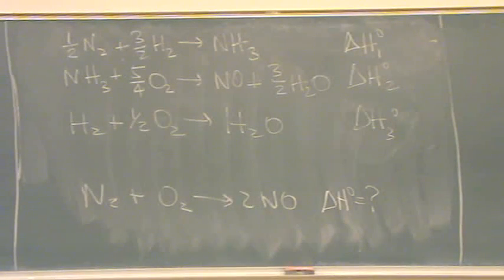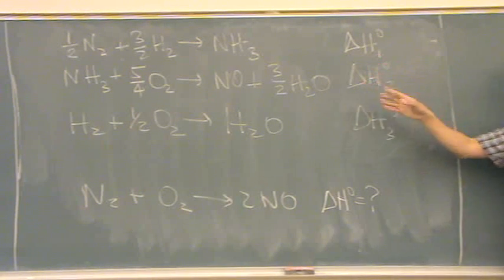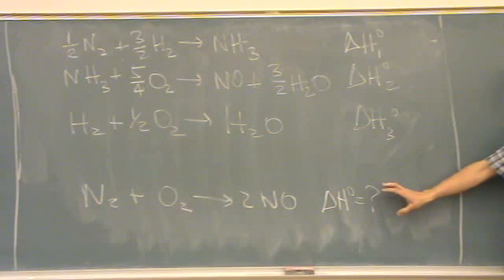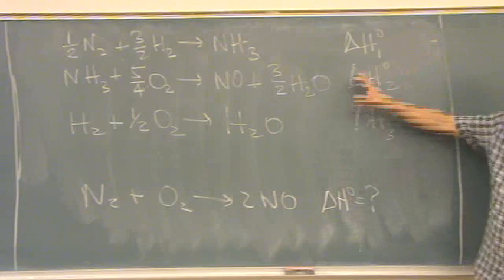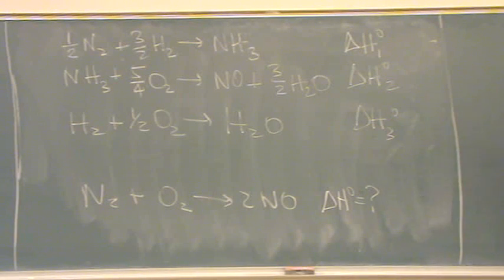So what happens is, you have these. These are kind of your elementary steps. And then this bottom one's called your overall reaction. You want to know delta H for the overall, and you're only given these three delta Hs. Definitely a Hess's law question. These can be a little tricky.